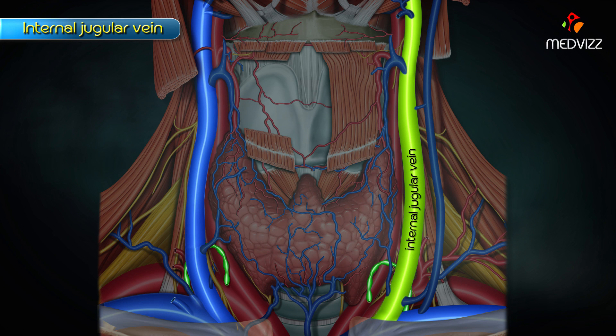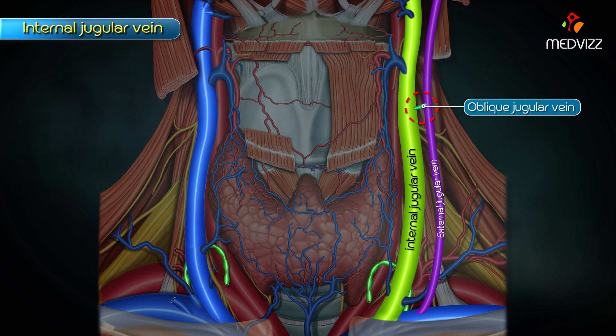In the middle of the neck, the internal jugular vein may communicate with the external jugular vein through the oblique jugular vein, which runs across the anterior border of the sternocleidomastoid muscle.